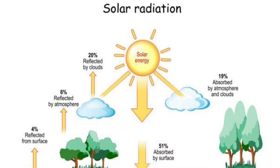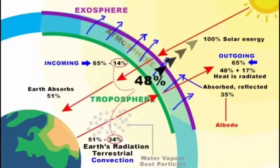The Earth radiates back 51 units of insolation received by the Earth's surface in the form of terrestrial radiation. Of the 51 units of terrestrial radiation, 17 units are radiated to space directly without heating the atmosphere, and only the remaining 34 units are absorbed by the atmosphere. In total, 48 units are absorbed by the atmosphere: 14 units from the incoming solar radiation and 34 units from the terrestrial radiation of the Earth.